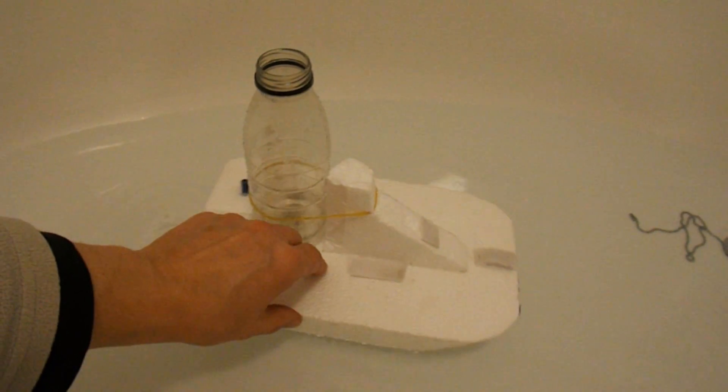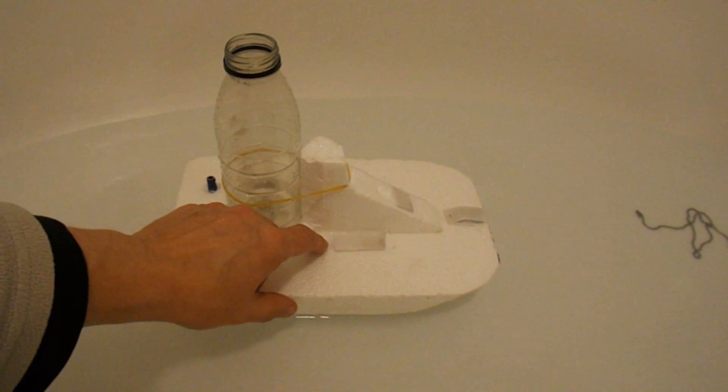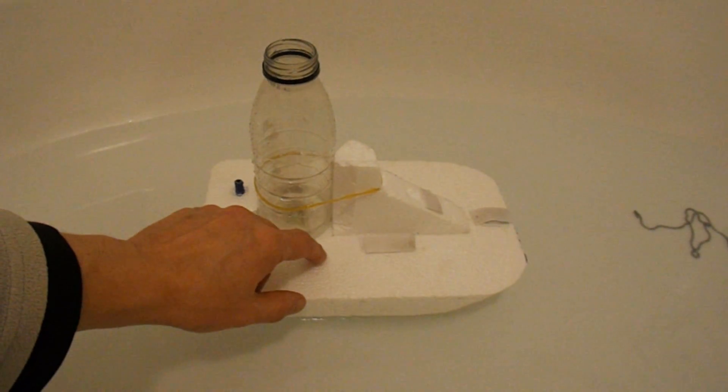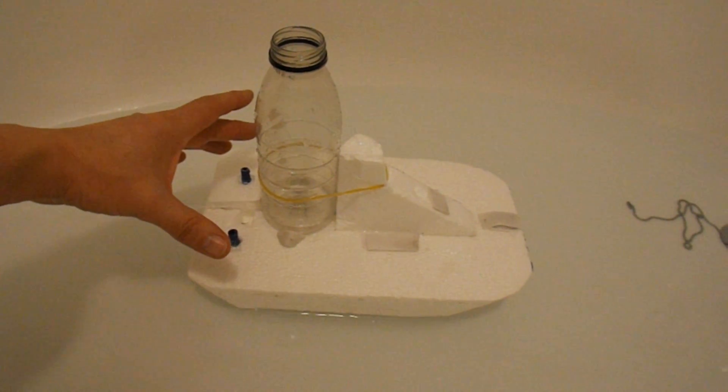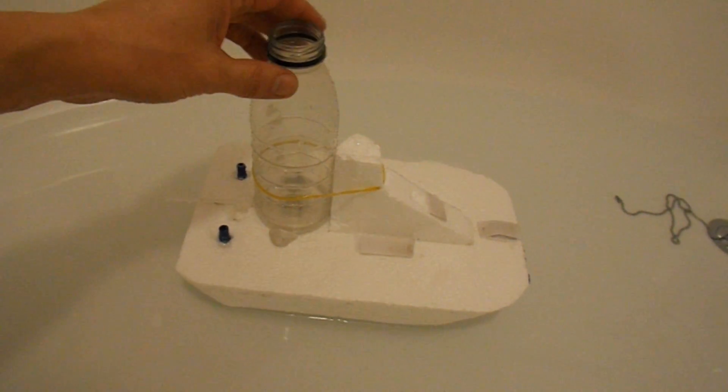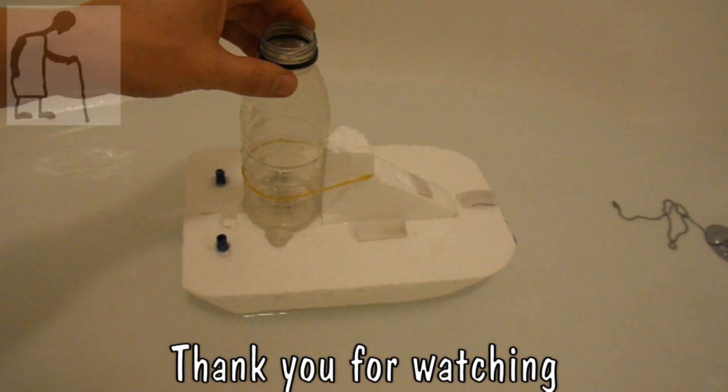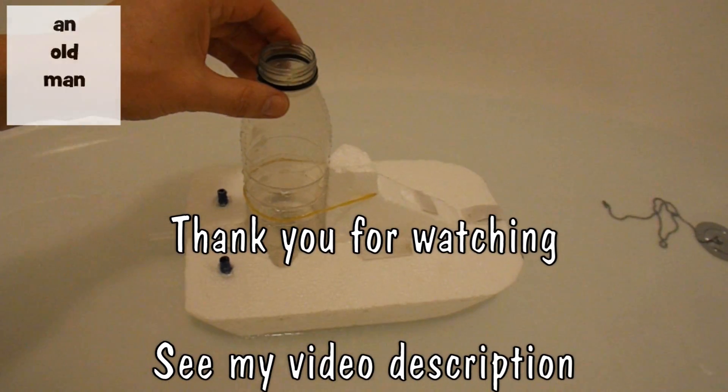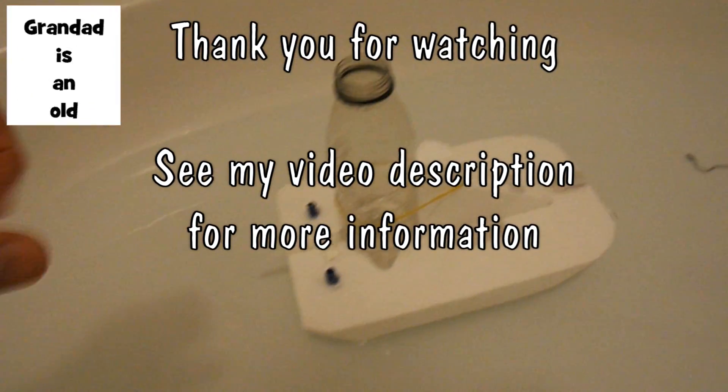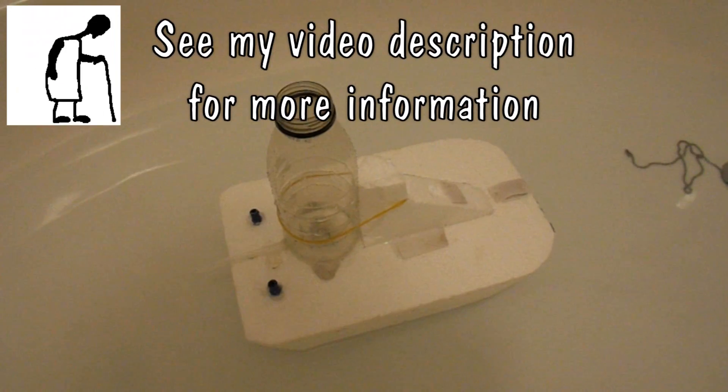So, just a simple piece of polystyrene packaging, cut into a boat shape. Quite wide to give us some stability, so that the boat doesn't tip over with the weight of the bottle. But that works absolutely fine. You could have a bigger boat and a bigger bottle, but that one's suitable for my bath.